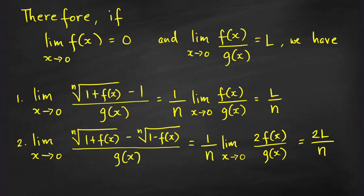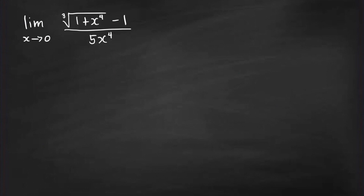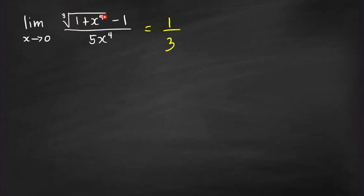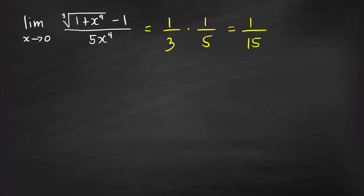Let's go back to the previous two problems. For the first limit, our f(x) is x raised to 4, which goes to 0 as x goes to 0. So finding this limit is very easy. The limit of f(x) over g(x) — that is x to the 4 over 5x to the 4 — is just equal to 1 over 5. Using our technique, the limit is just 1 third, which is the power of (1 plus x raised to 4) — so that's (1 plus x to the 4) raised to 1 third. You take 1 third times the limit of the expression without the radical. Removing the radical gives x raised to 4 in the numerator, whose limit is 1 over 5. Multiplying gives the limit equal to 1 over 15.